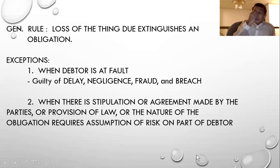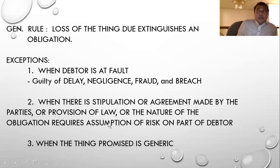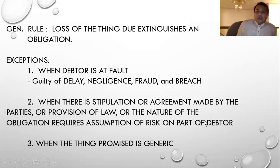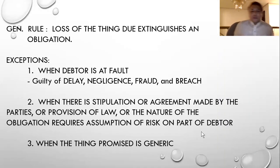The third exception is when the thing promised is generic. Generic means it is identified only by its species — like a car, a dog, a cat, or a horse. These are generic because the principle here is 'genus nunquam perit' — the genus never perishes.